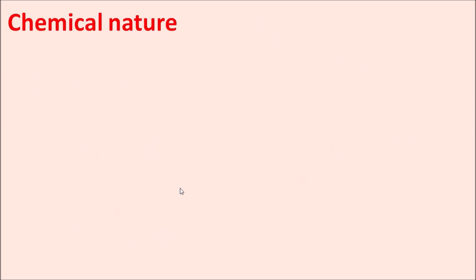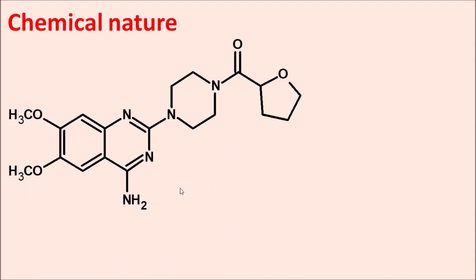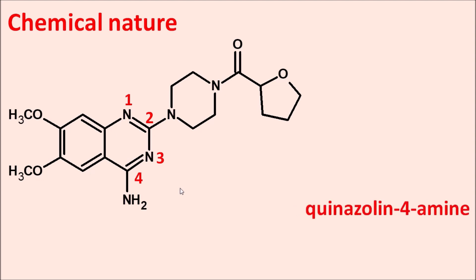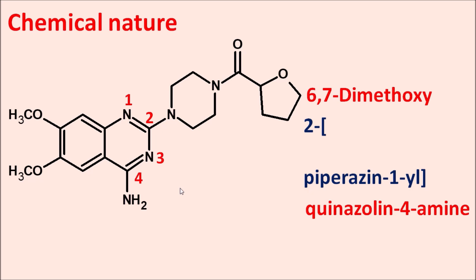Now let us see the chemical nature of this drug. This is the structure of Terazosin. Here we can observe it has a quinazoline moiety with two nitrogens. Starting the numbering from the first nitrogen: position 1, 2, 3, 4, and so on. An amine group is present at the 4th position, so the suffix of the name is quinazolin-4-amine. Similarly, it has methoxy groups at the 6th and 7th positions, written as 6,7-dimethoxy. At the second position there is a piperazine side chain attached at the first position, written as 2-(piperazin-1-yl).